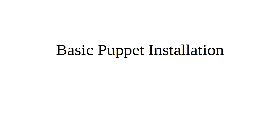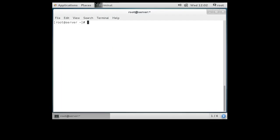Normally Puppet requires two gigabytes of memory, and we are going to be running with one gigabyte, so we're going to need to tell it that we're using one gigabyte instead.